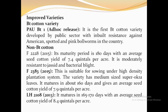The second Non-Bt variety is F2383. It was also released in 2015 and is suitable for sowing under the high-density plantation system. The variety has medium-sized super-okra leaves. It matures in about 160 days with an average yield of 7.9 quintals per acre.